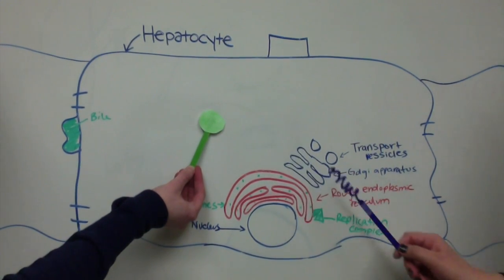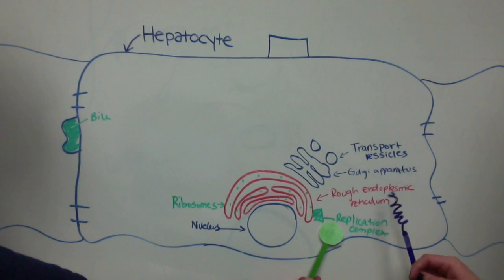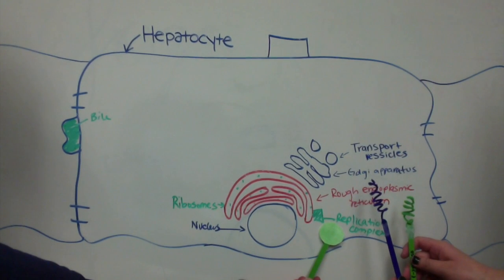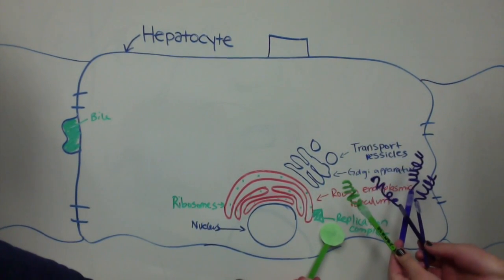The non-structural proteins form the replication complex. This replication complex replicates single-stranded RNA positive to single-stranded RNA negative. The single-stranded RNA negative serves as a template for the replication complex to produce many single-stranded RNA positives.